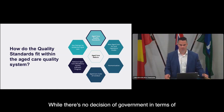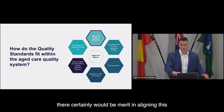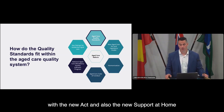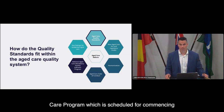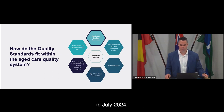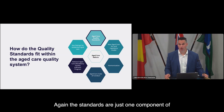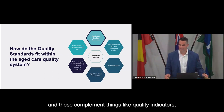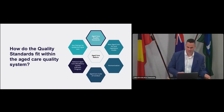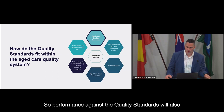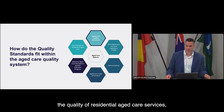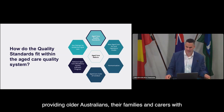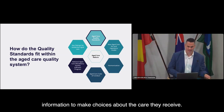While there's no decision of government on implementation timing for the current standards, there would certainly be merit in aligning with the new Act and also the new Support at Home Care Program, which is scheduled to commence in July 2024. The standards are just one component of a range of regulatory requirements used to drive provider performance and protect older people — these complement things like quality indicators and the Serious Incident Response Scheme. Performance against the quality standards will also inform the new Star rating system, highlighting the quality of residential aged care services for all Australians, their families and carers.